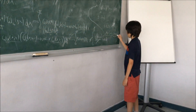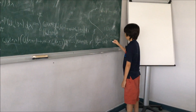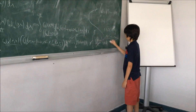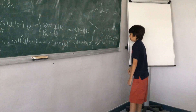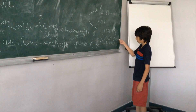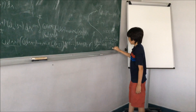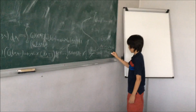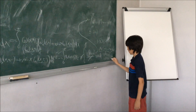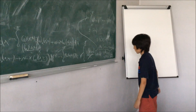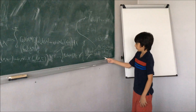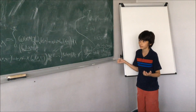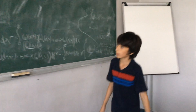Notice that this is e to the t times F of t, which is decreasing. This means F of t is less than or equal to F of zero divided by e to the t. We know that F is positive and this is going to zero, so F of t has to go to zero, which is what we wanted to prove.